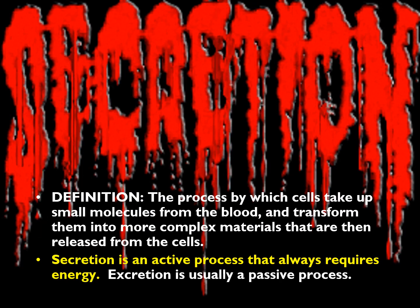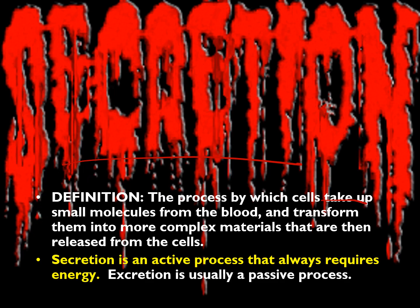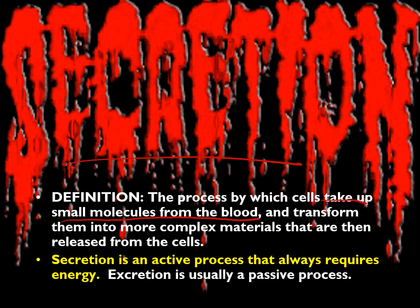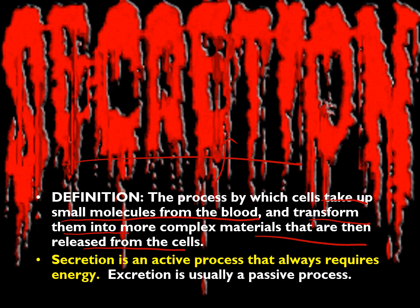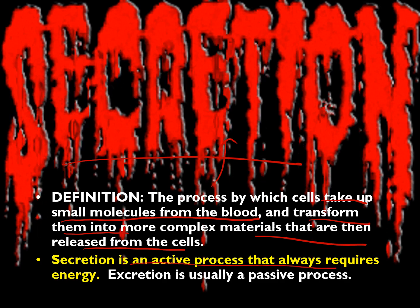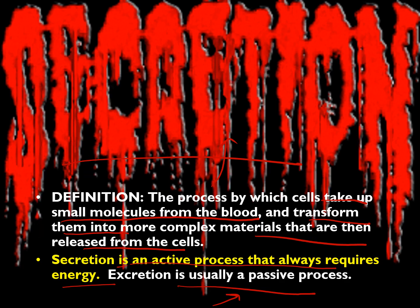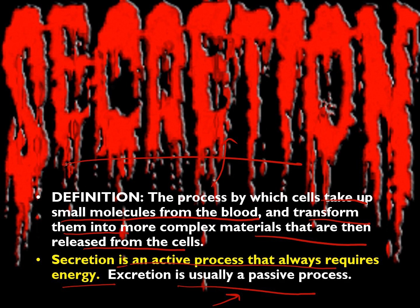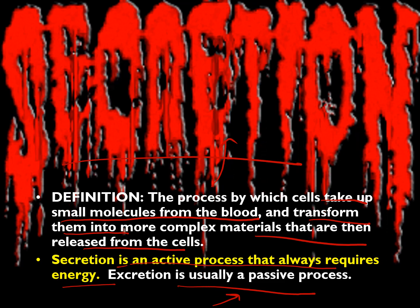The product of the gland is called the secretion. Secretion is the process by which cells take up small molecules from the blood, transfer them into more complex structures, and then release them — a process that requires energy. When the process is passive and requires no energy, we call it excretion. So secretion and excretion are similar but differ in energy requirement.